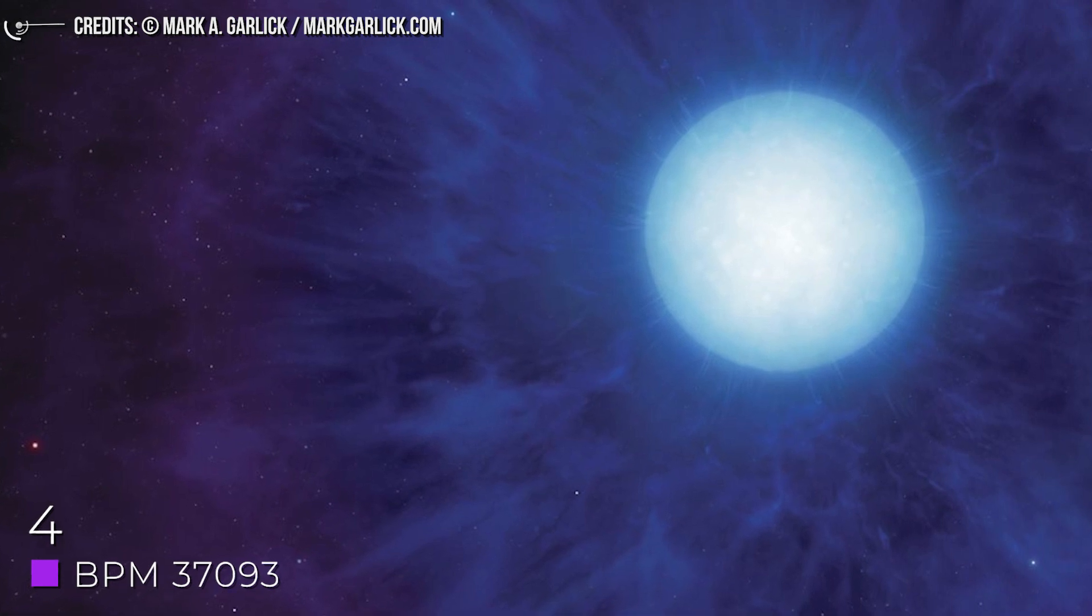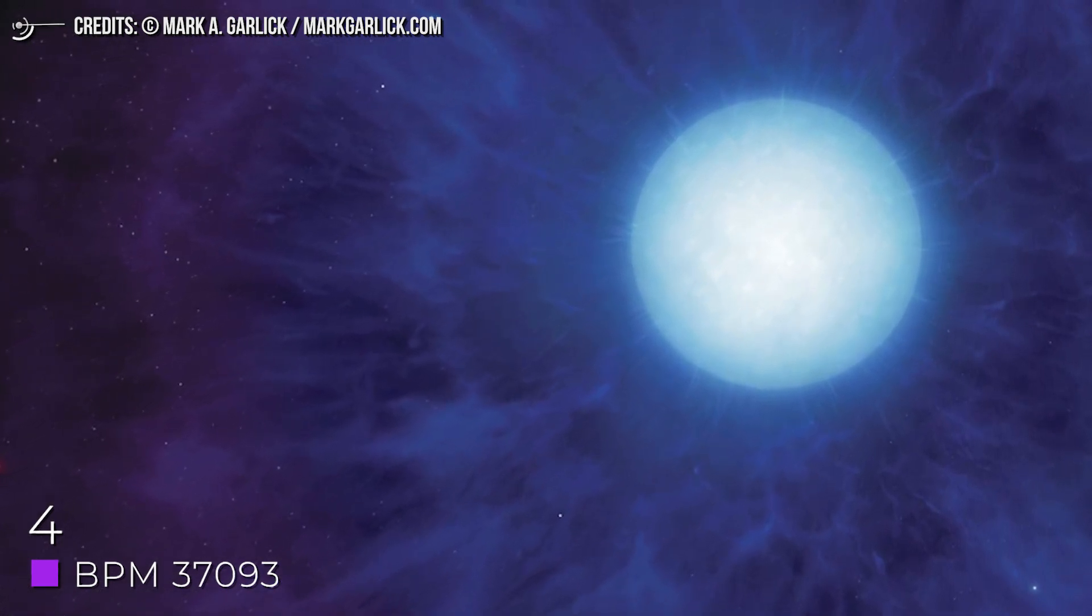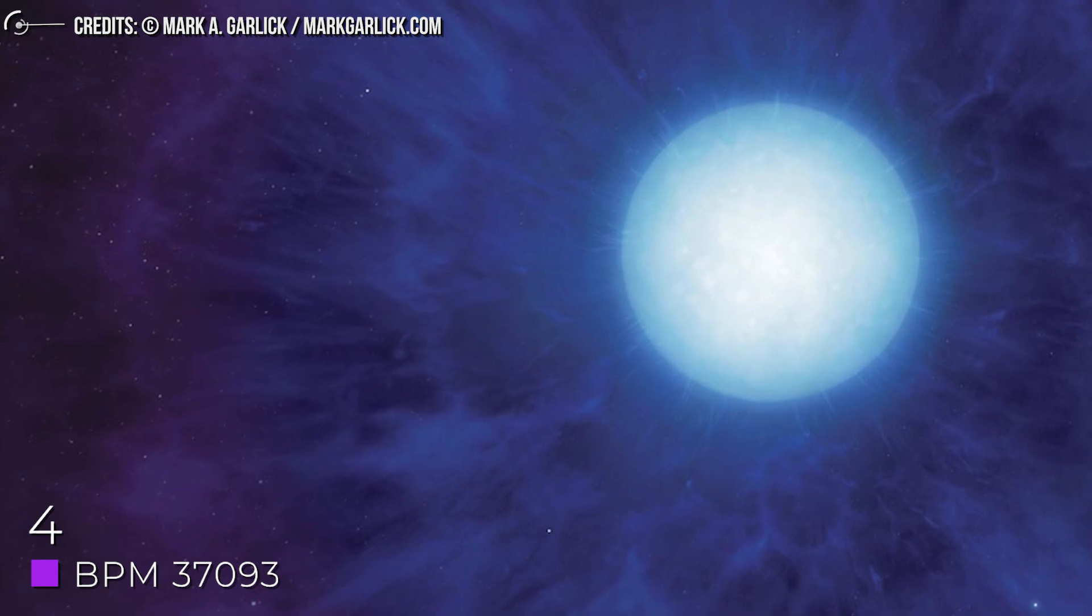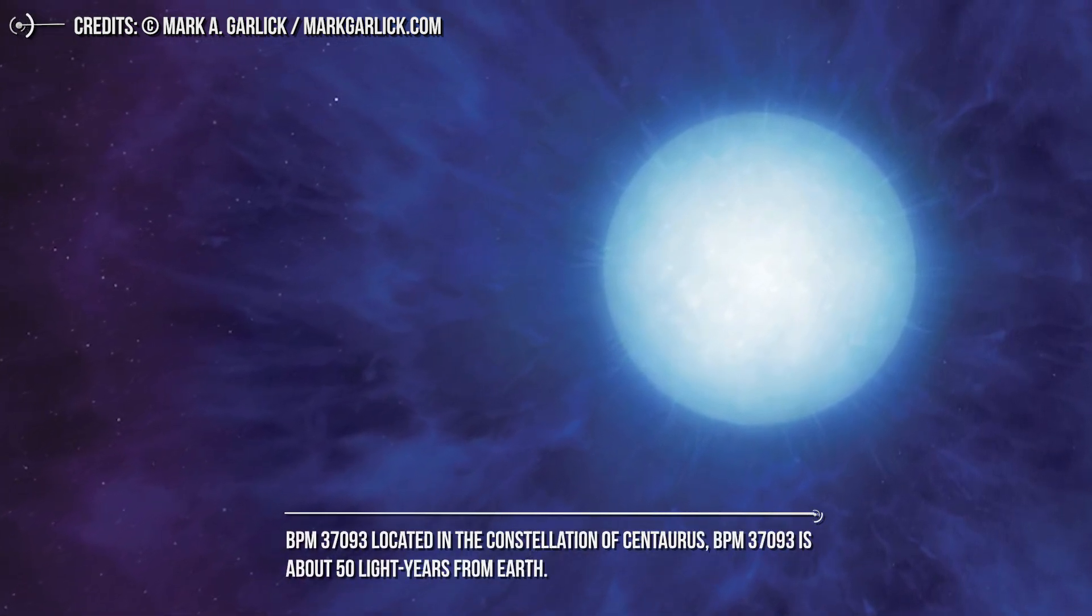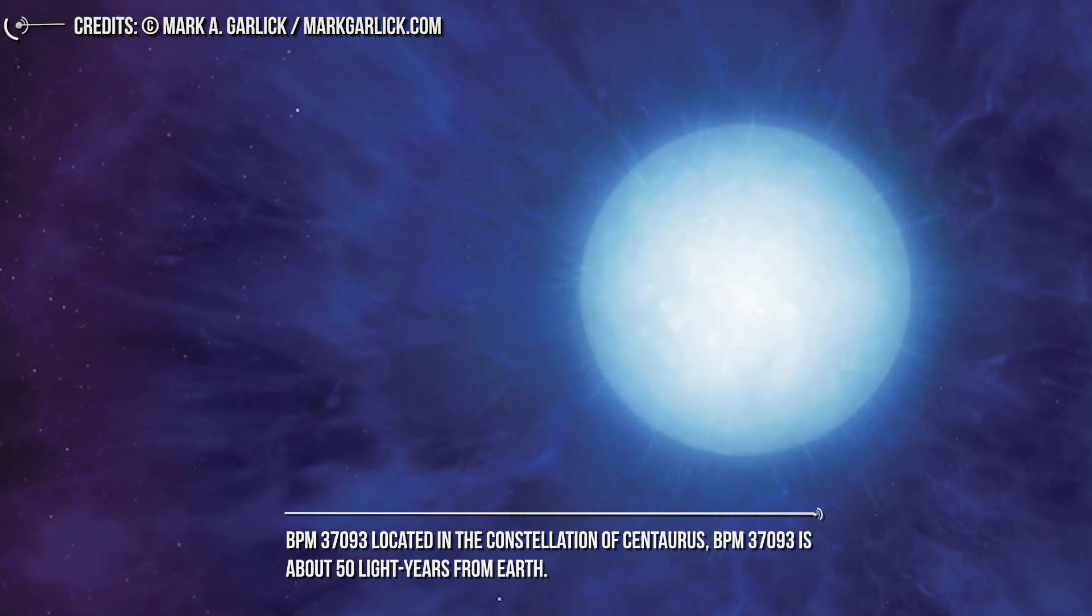Number 4: BPM 37093. No, it's not referred to a song's tempo. BPM 37093, located in the constellation of Centaurus, is about 50 light years from Earth.